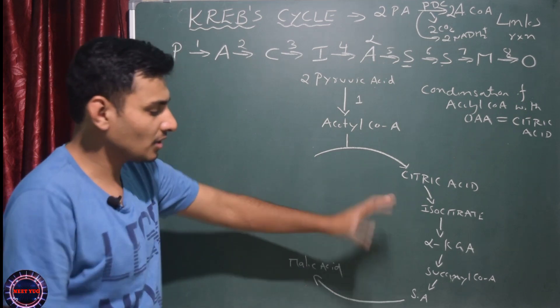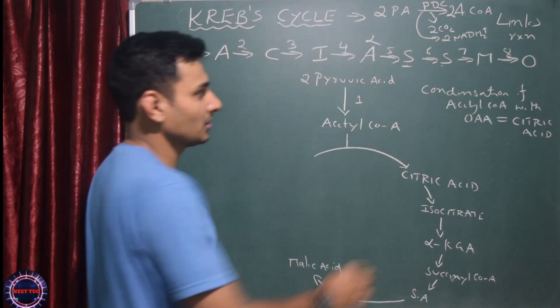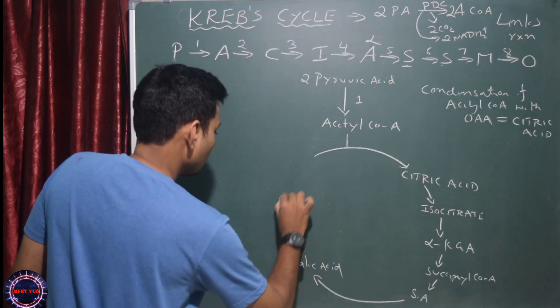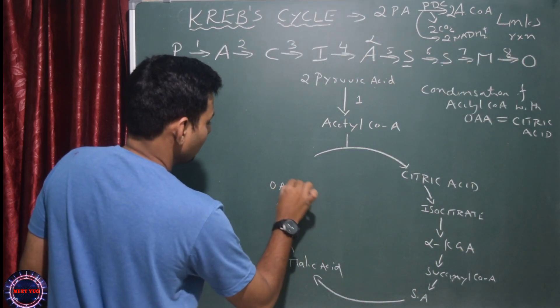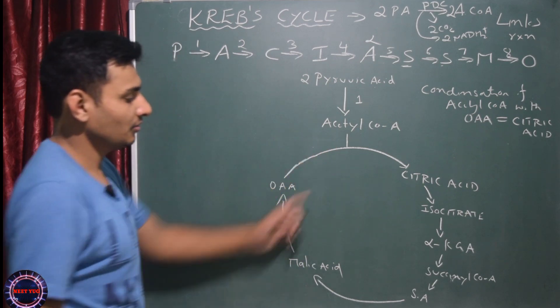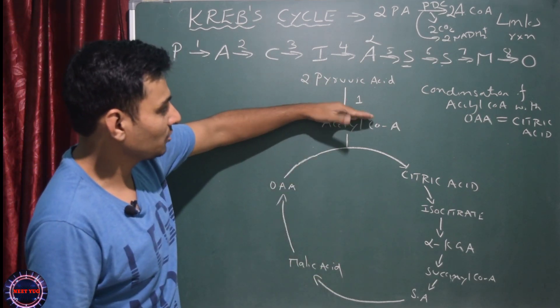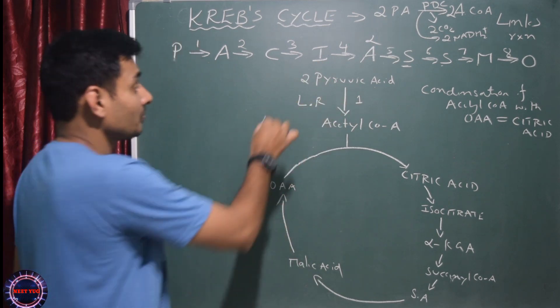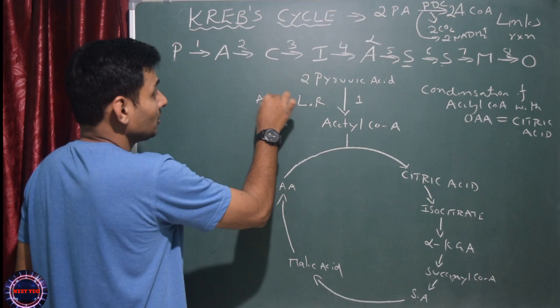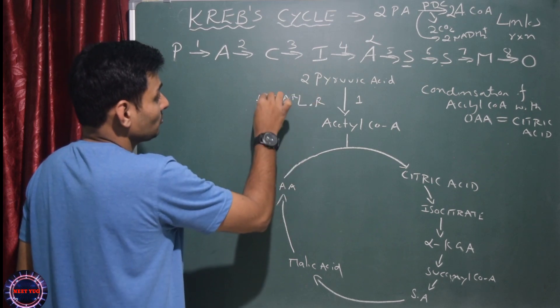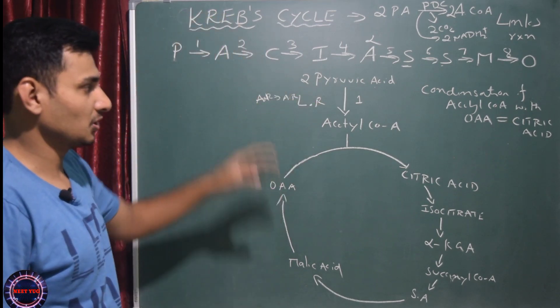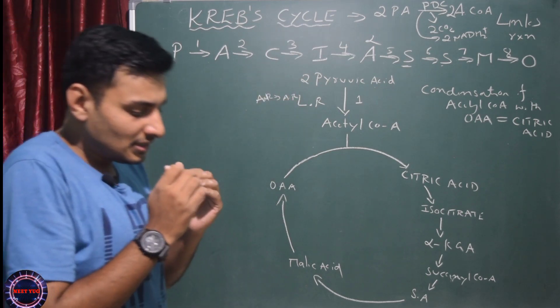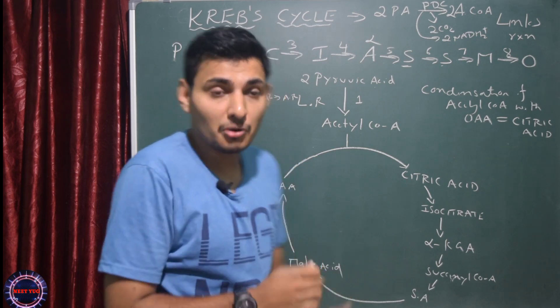Don't worry if NCERT has a different order - doesn't matter. What we need is the correct content. M, and the last one is here - oxaloacetic acid. That's it. This is actually the entire Krebs cycle. Krebs cycle starts from here. Links reaction is very important - it links anaerobic respiration to aerobic respiration.